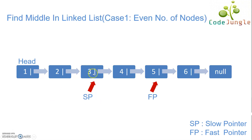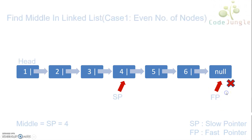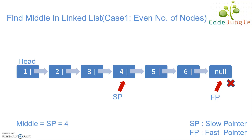Now slow pointer points to node 3 and fast pointer points to node 5. In the next iteration we check the same condition. Neither the fast pointer is null nor fast pointer's next node is null, so we increment slow pointer by 1 and fast pointer by 2. In the following iteration, fast pointer points to null, so the iteration stops. The middle element is the node to which the slow pointer is pointing — which is node 4. Hence, the middle element is node 4.